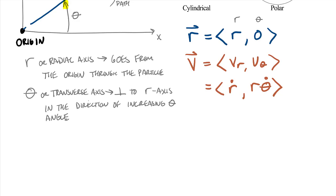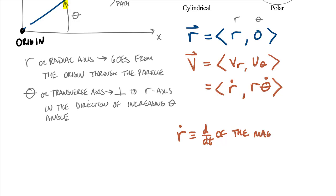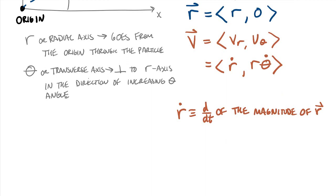So r_dot is defined as d/dt — the time rate of change — of the magnitude of r. And v_theta is defined as the time rate of change of the direction of r, which equals r times theta_dot.